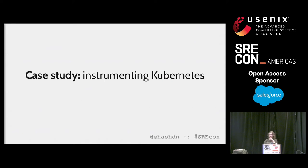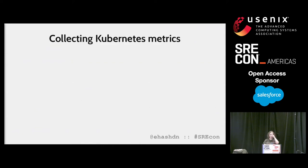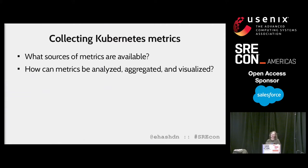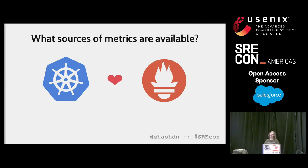We'll walk through instrumenting Kubernetes as a case study. We're going to need to collect some metrics, but what metrics are even available? And once we have those metrics, what can we do with them? How can we analyze, aggregate, and visualize them to learn things about a Kubernetes cluster? Many components in the Kubernetes stack export Prometheus metrics out of the box. Like Kubernetes, Prometheus is a Cloud Native Computing Foundation project. It's a time series-based monitoring system that scrapes metrics on an interval from instrumented jobs. Because of Prometheus' widespread support in the Kubernetes ecosystem, it is very likely it will be an important part of your monitoring stack.